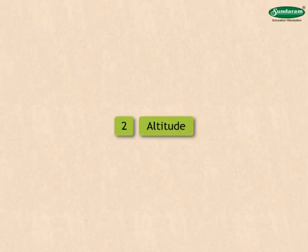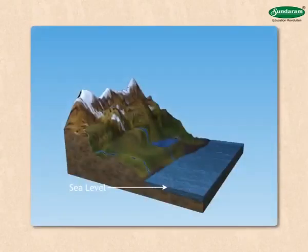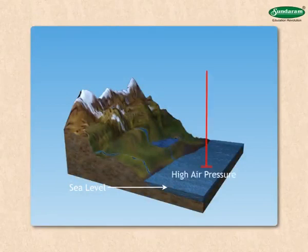Altitude. Due to the pressure of the upper layers, the air pressure near the surface of the land is high. The height of the column of air decreases as we go high above sea level. Therefore, air pressure is less at higher altitudes.